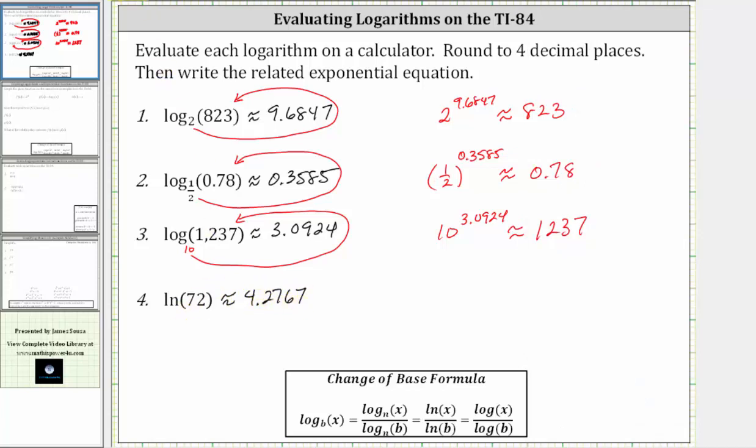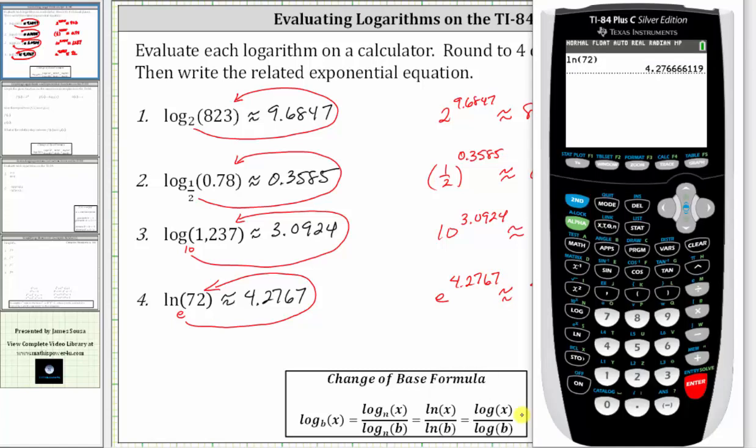Natural log is log base e. The related exponential equation is e raised to the power of 4.2767 is approximately 72. Let's verify this. If we press second natural log, this brings up e to the power of, and we simply enter the exponent, which does give us approximately 72.